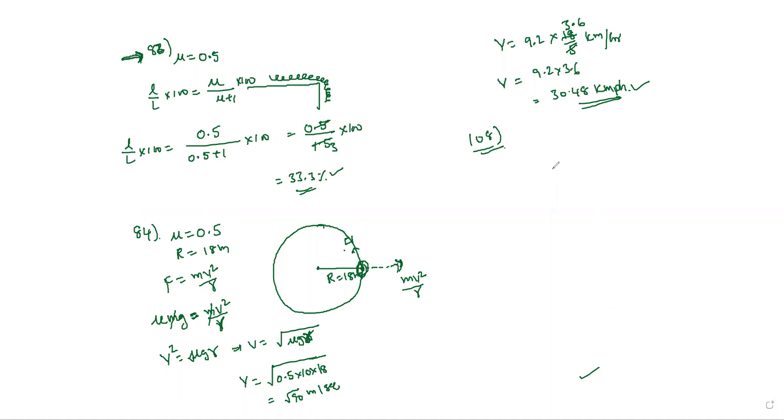An engine of mass 500 kg is going up an inclined plane, 3 in 5, at the rate of 36 km per hour. If the coefficient of friction is 0.5, the power of engine is?